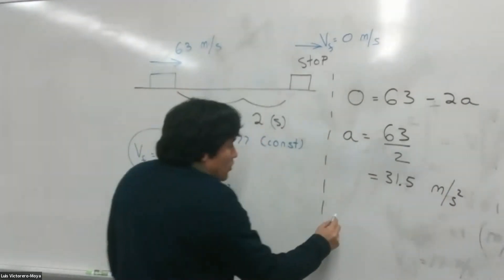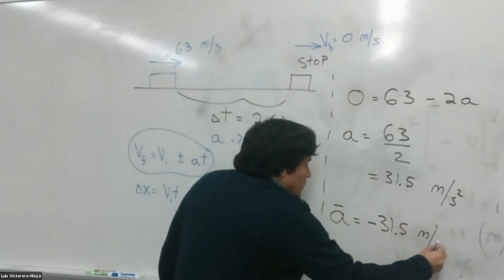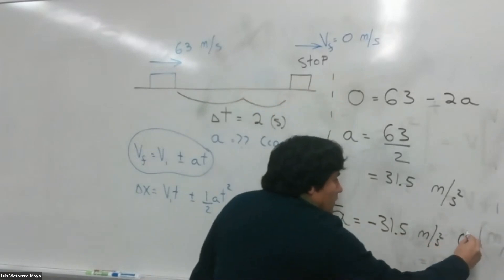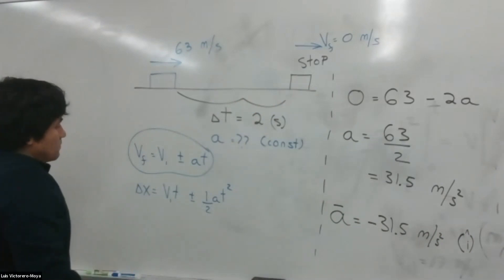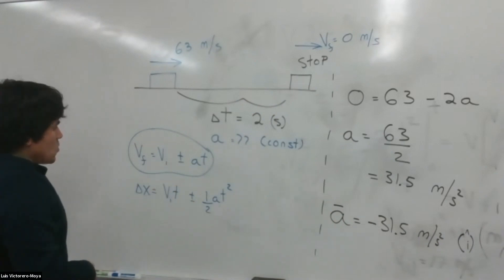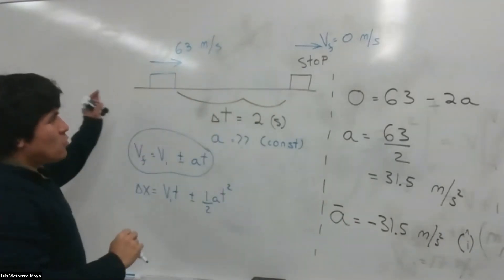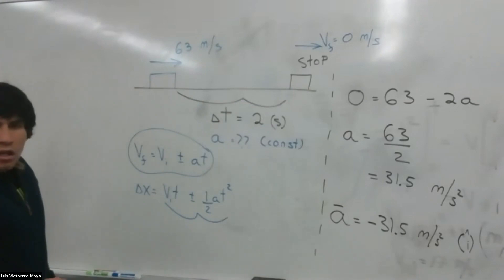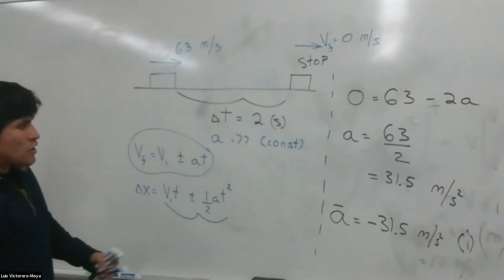Written as a vector, the acceleration would be negative 31.5 meters per second squared in the i (negative x) direction, since the plane is decelerating. To find the distance traveled, since it's moving only in one direction, the distance equals the displacement. We use the displacement equation with the given time. You look at the data, identify which equation fits, and apply it — that's the approach for every constant-acceleration problem.